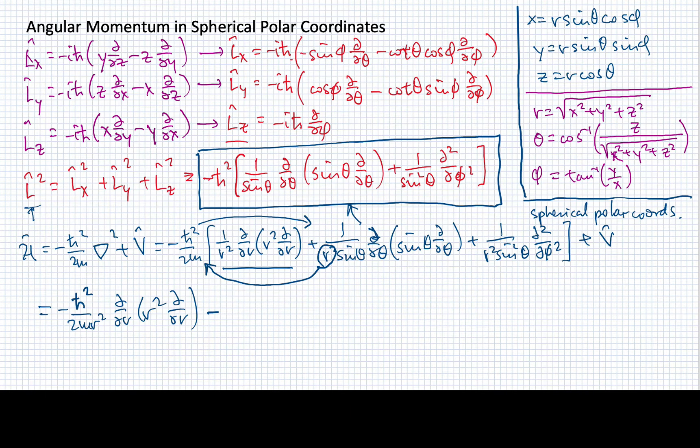Then I'll have minus 1 over 2m r-squared, and I'm going to keep the h-bar separate out here, h-bar squared. And what's left in here? I'll have 1 over sine theta, d/dθ, sine theta, d/dθ, plus 1 over sine squared theta, d²/dφ².